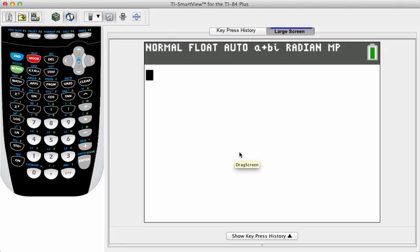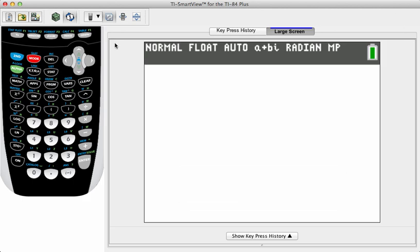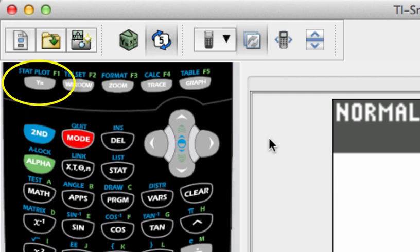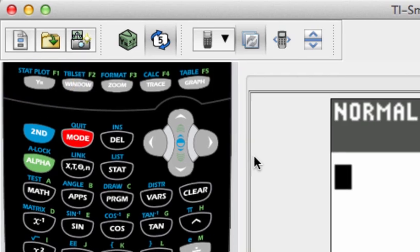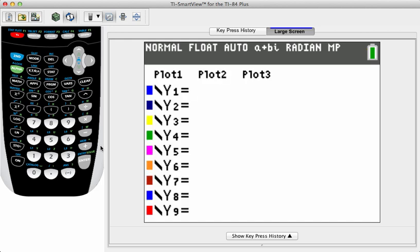Now, on your calculator, this is the home screen, this is the screen that you do most of your calculations on. First thing that you're going to do is you're going to go to the Y equals screen, which is in the upper row of the keypad on the far left. It's the button marked Y equals, and when you press this button, if there are any functions in here already, you might just want to clear them out. Make sure you've got a blank slate to work with here.